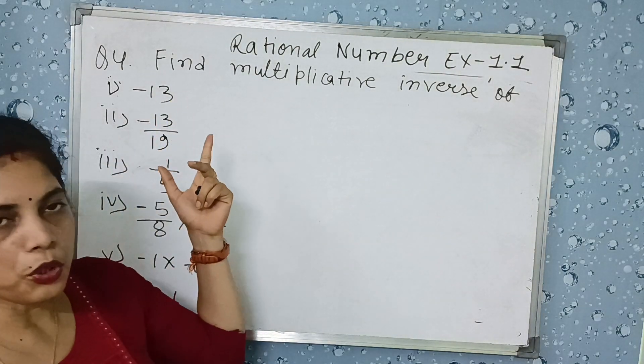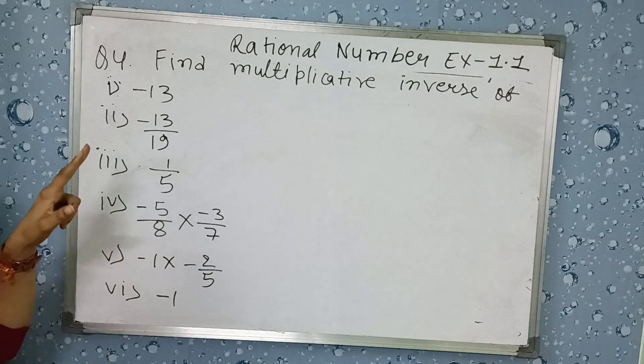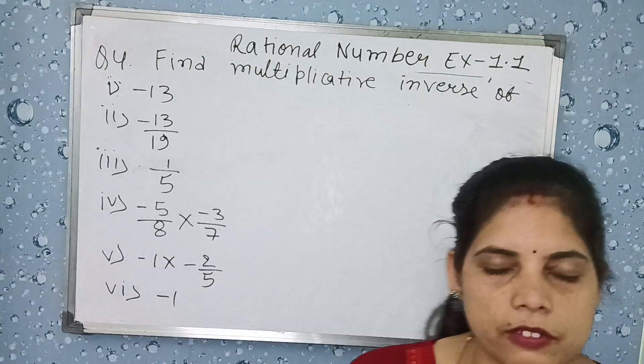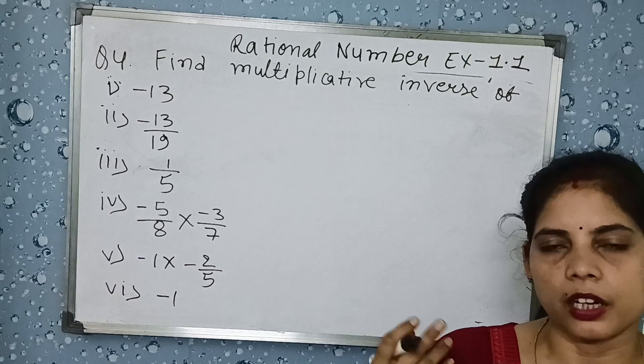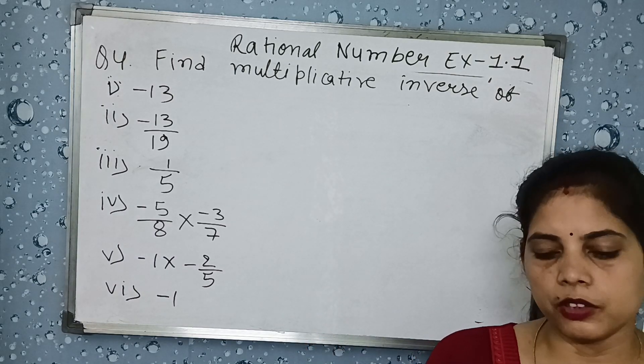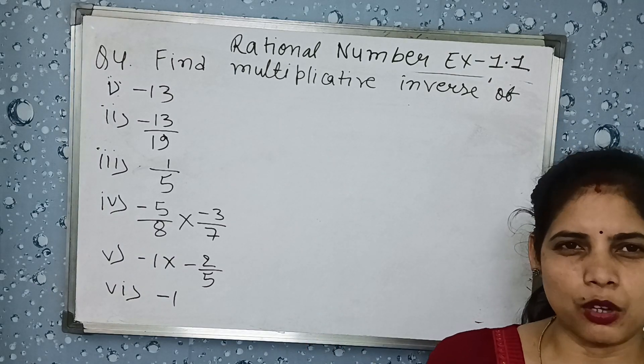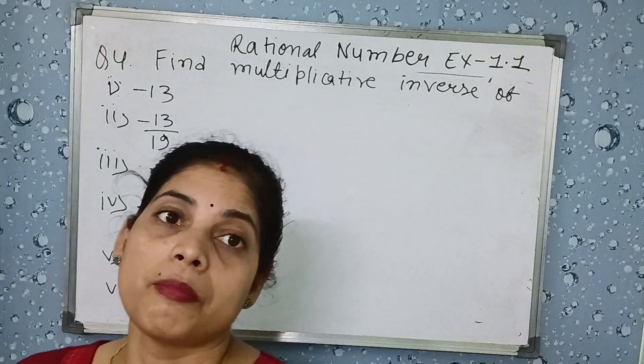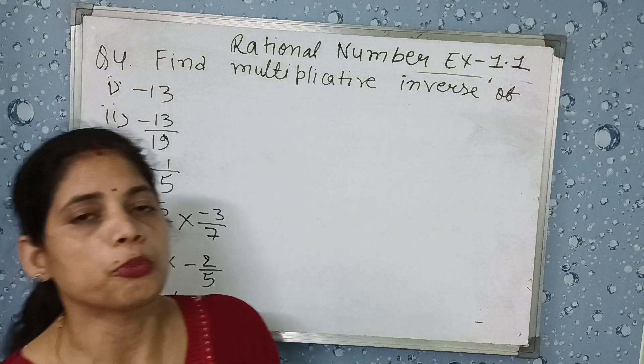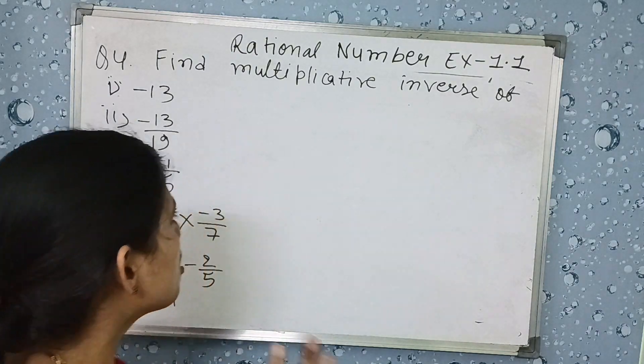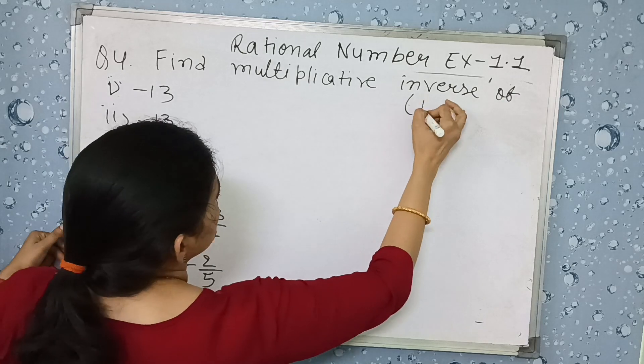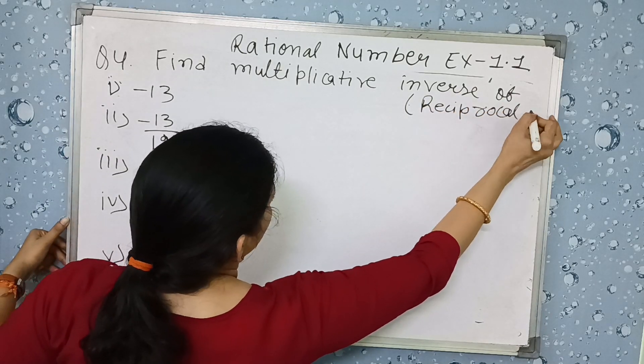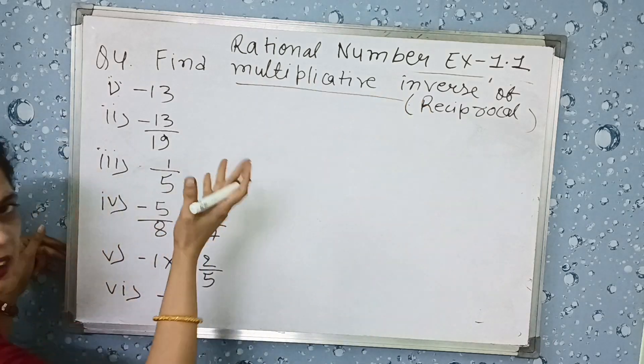Now come to question number fourth. I told you that multiplicative inverse is also coming in the concept. So additive inverse and multiplicative inverse, just memorize it. Additive inverse means opposite signs of any number, or multiplicative inverse means reciprocal. Means numerator will become denominator and denominator will become numerator. So in that case it means it is reciprocal. Don't get confused with the heavy words.